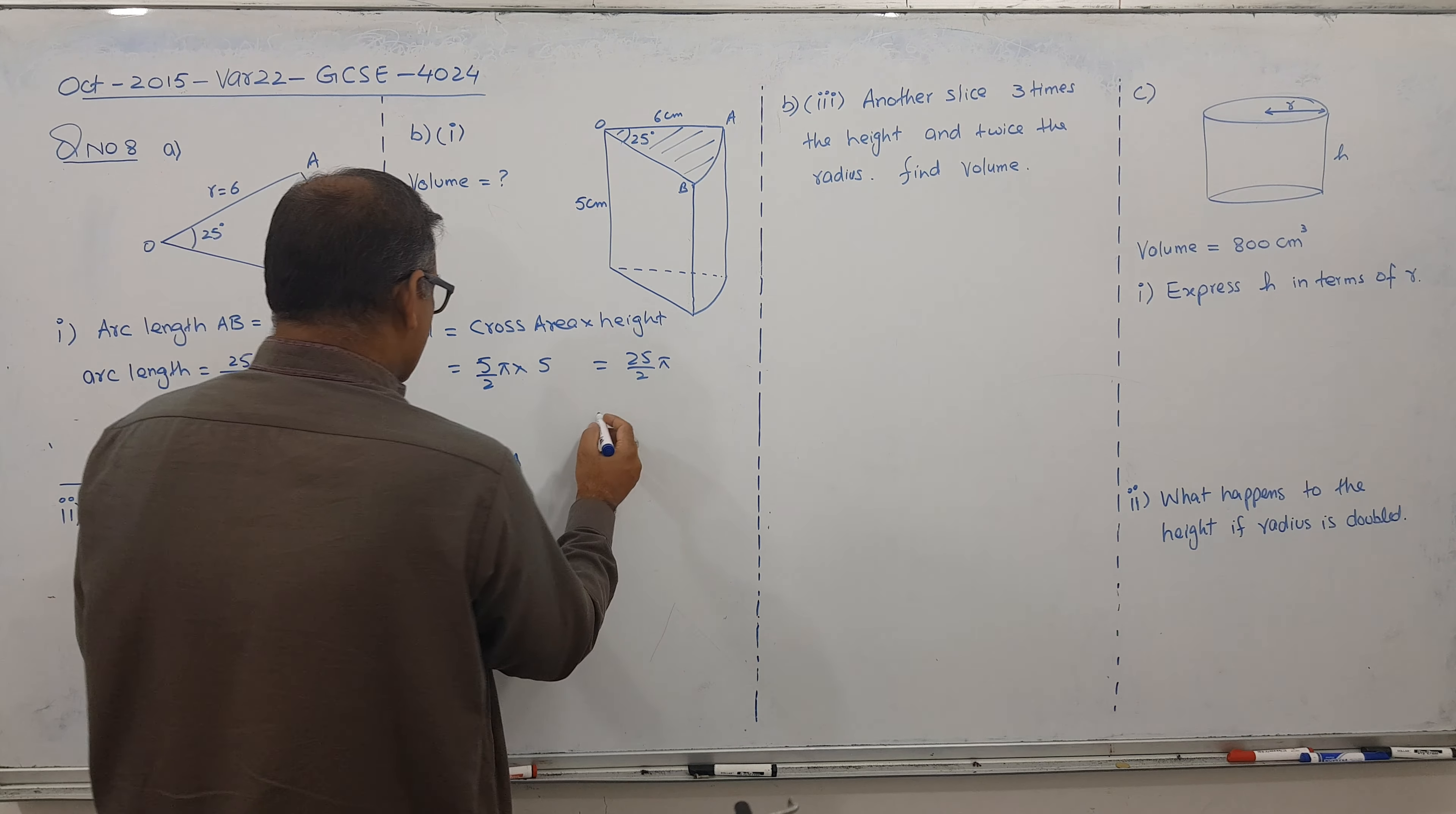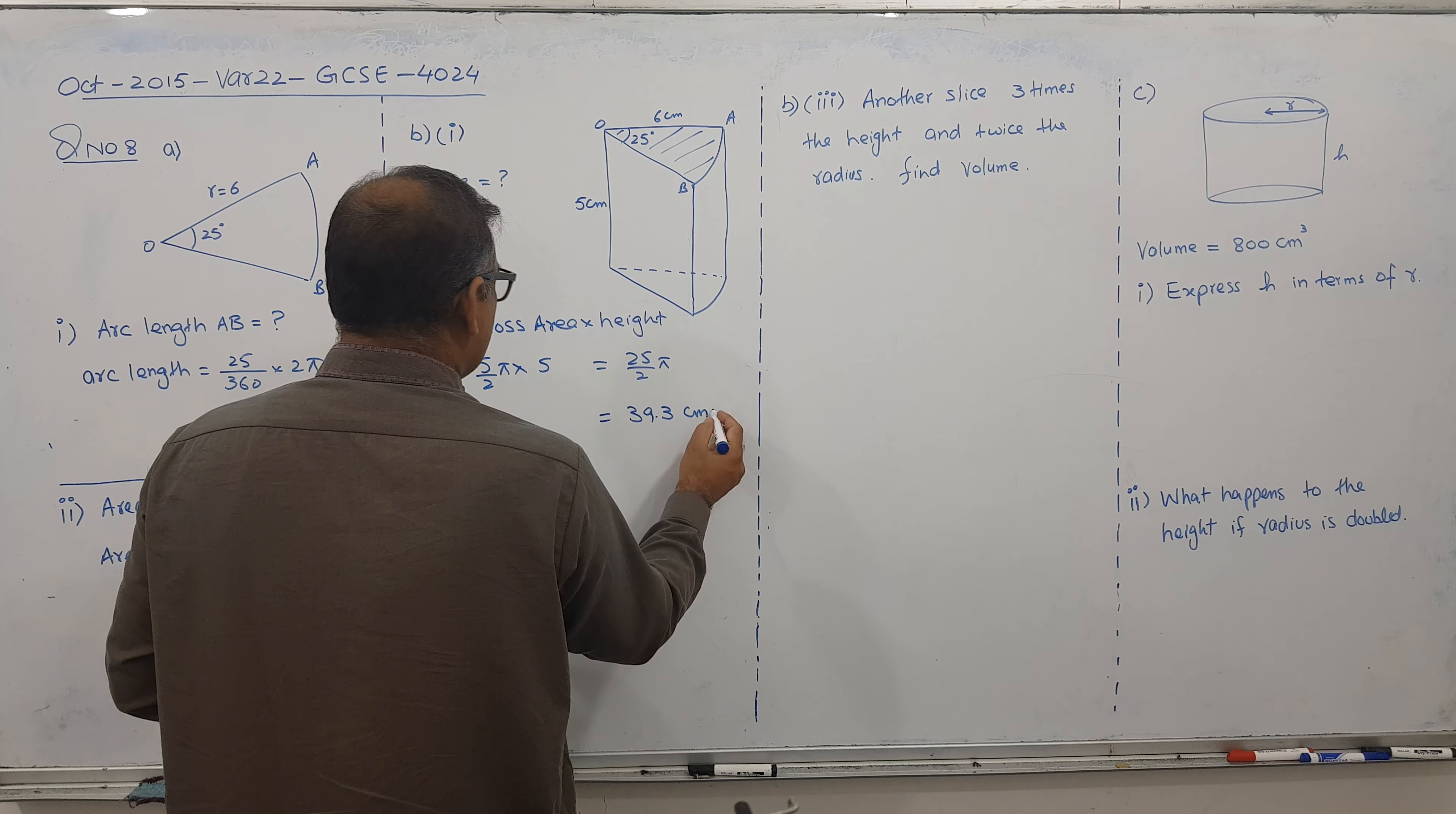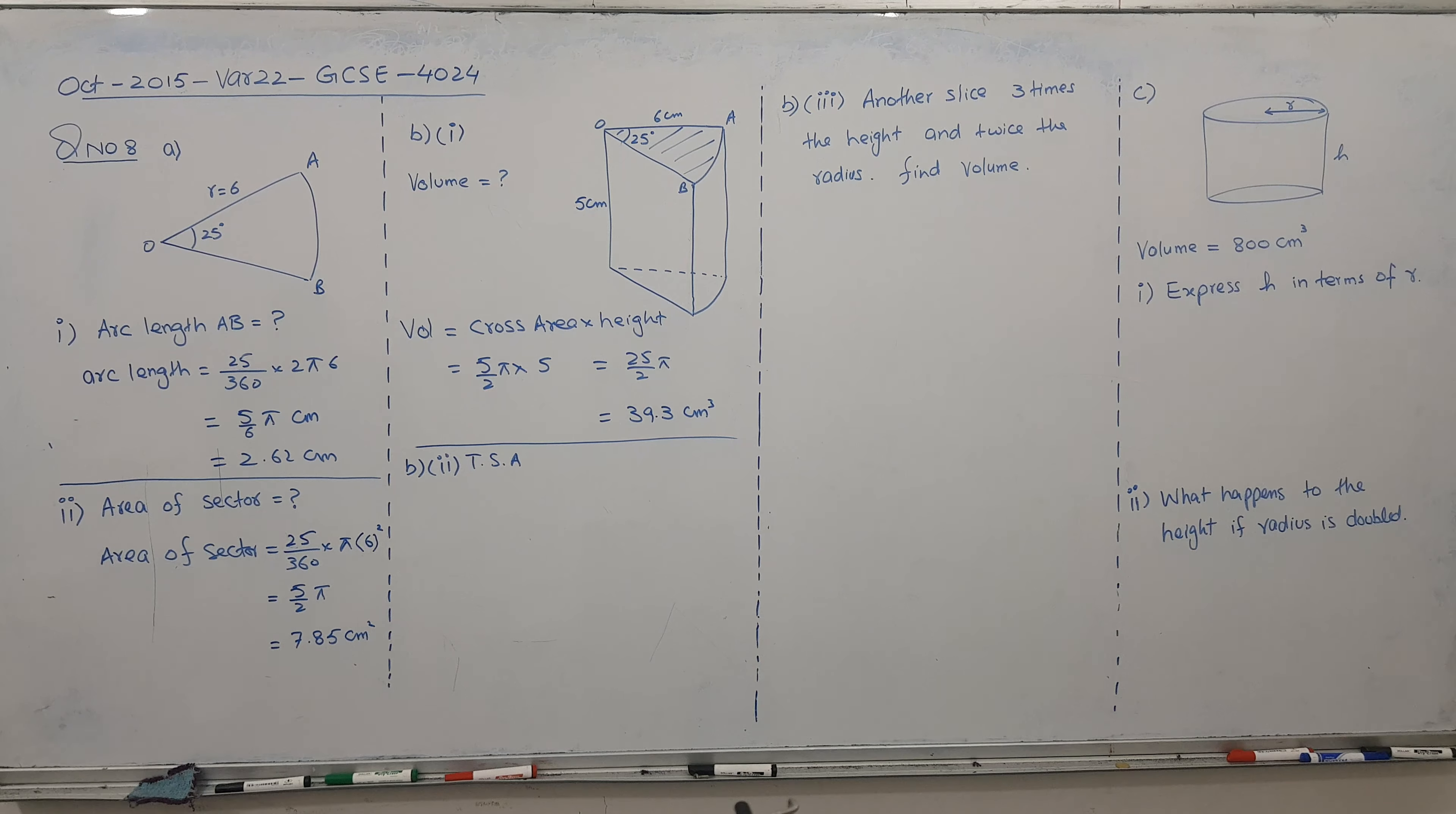So 25 divided by 2 times pi. It is giving answer. We are getting 39.3 centimeter cube. So we finished the third part even.